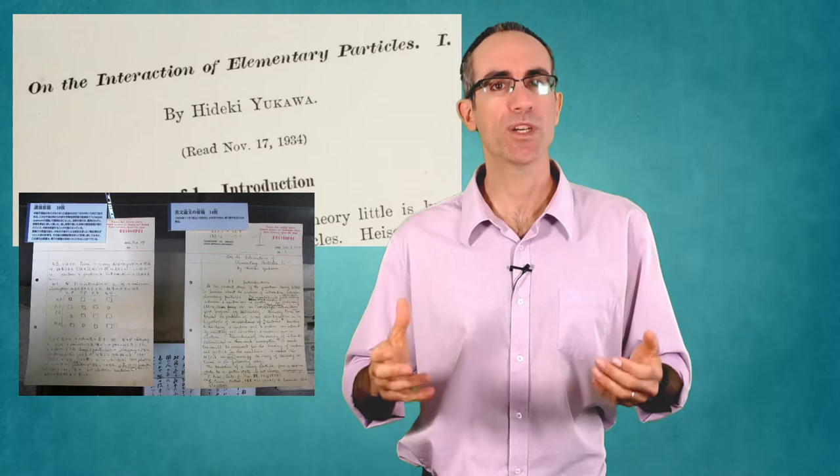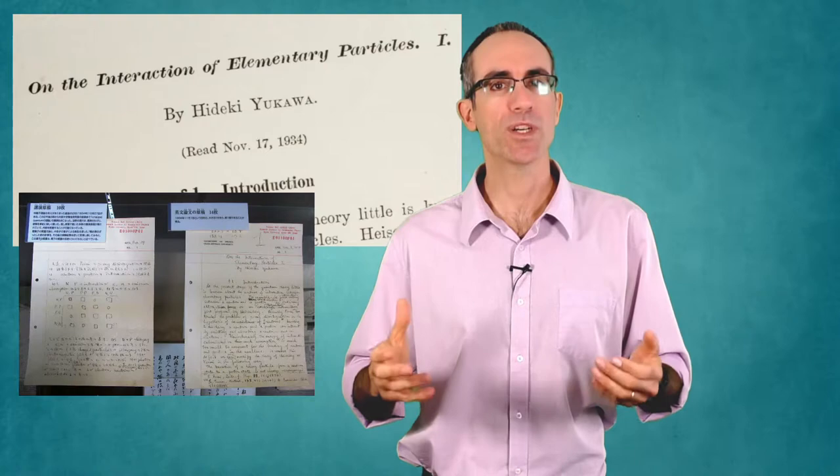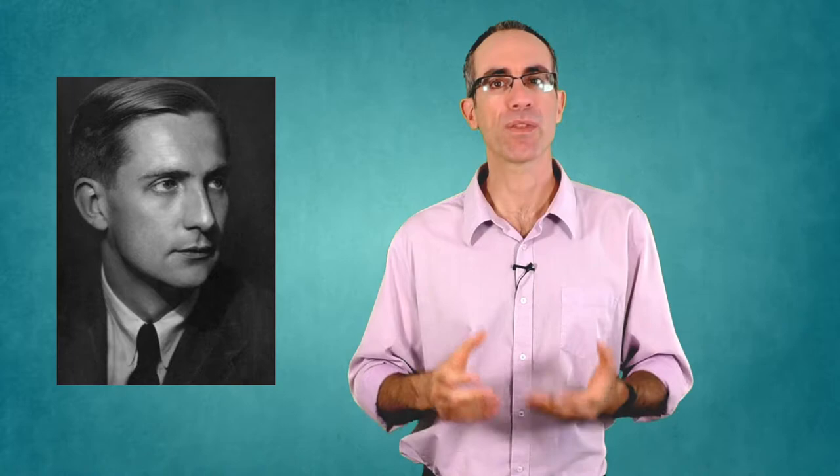This paper would eventually go to earn him the Nobel Prize for Physics and win him fame in the national and international scientific world. But at this point in time, it was simply ignored. For two years, it had absolutely no impact at all. Nicholas Kemmer, one of the first Western physicists to work on meson theory, later wrote that Yukawa in 1935 was ahead of his time and found the key to the problem of nuclear forces when no other theoretical physicist in the world was ready to accept it.